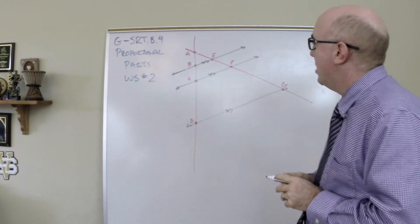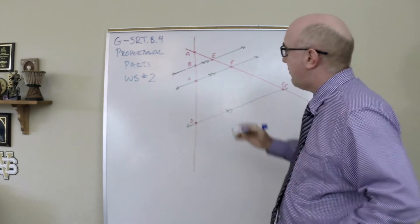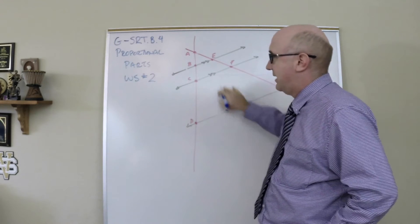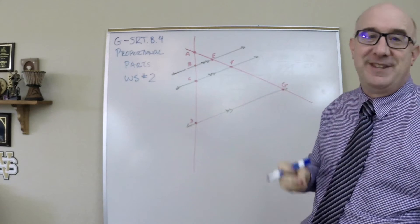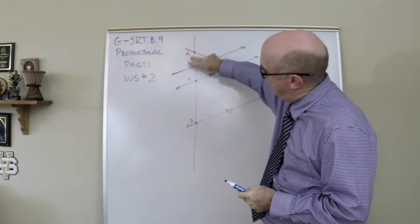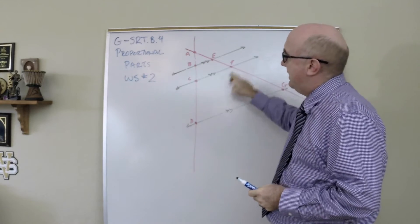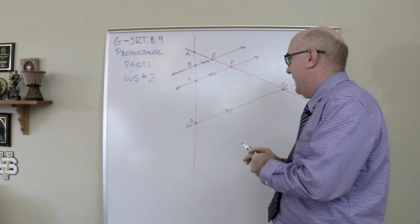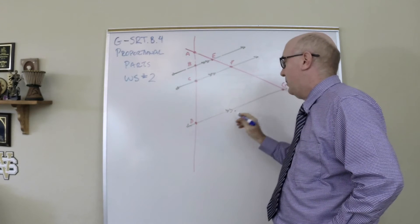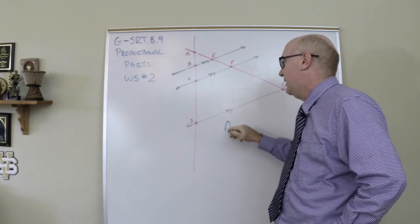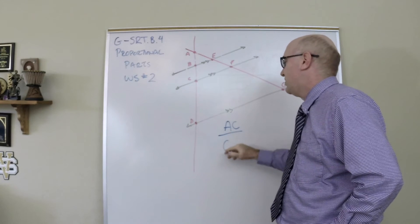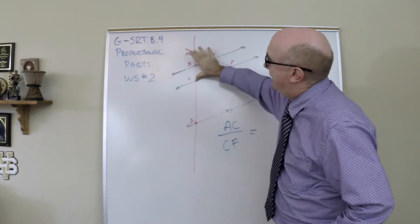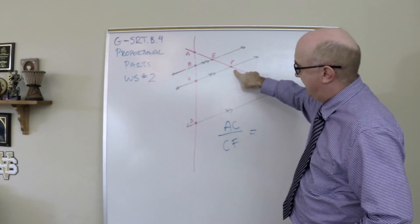One of the things that takes place is we will talk about these lengths here. Notice they are not a part of the side splitting relationship. Side splitting is pieces. BE, CF, and DG are not pieces. So if I was solving for these things, I would refer to full lengths of triangles.